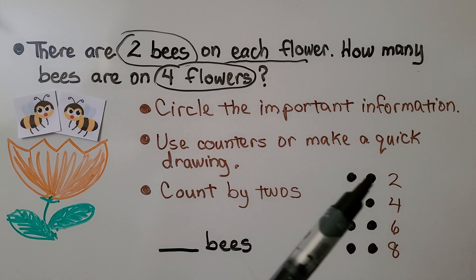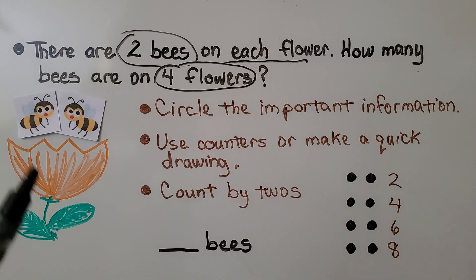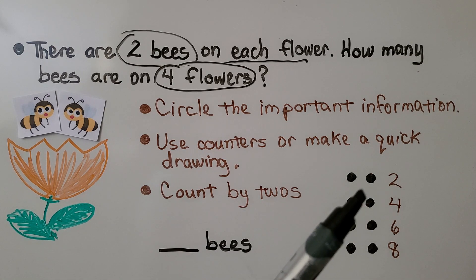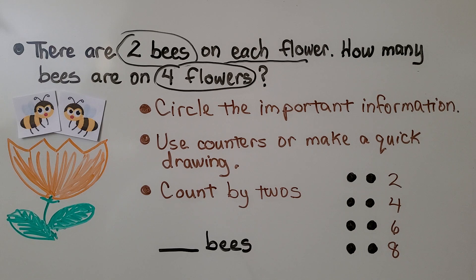If two bees are on one flower, then we would have two, four, six, eight bees. We can use counters or make a quick drawing with little dots and count by twos. There are eight bees.